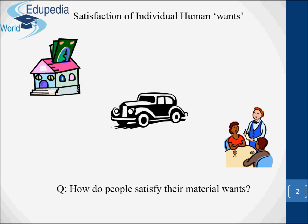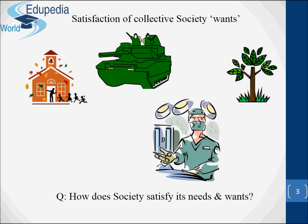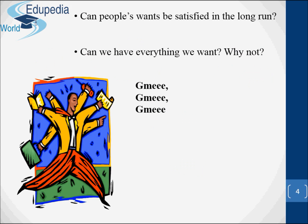In this section we will try to answer the following questions: How do people satisfy their material wants? How does society satisfy its needs and wants? Can people's wants be satisfied in the long run? Can we have everything we want?